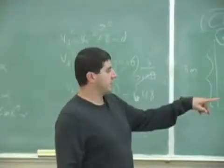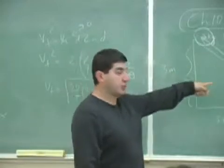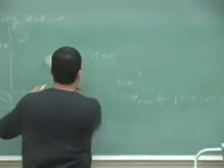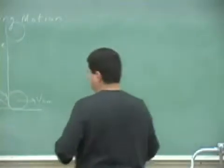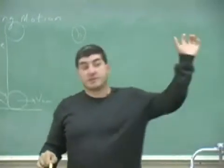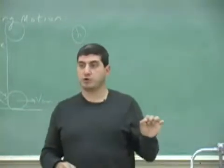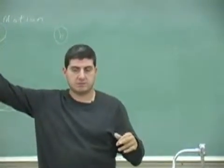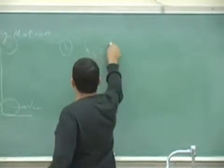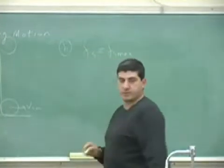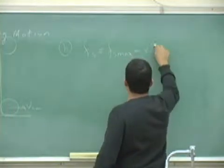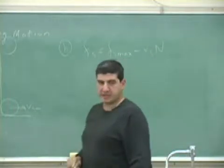So the next question is: what is the maximum angle given that mu s is 0.6? What is the maximum angle for pure rolling motion? The way to do that is to say when the object is on the verge of slipping, Fs will equal the maximum that it can be. The maximum that Fs can be is mu s times N.